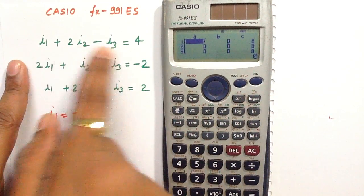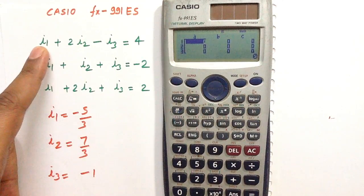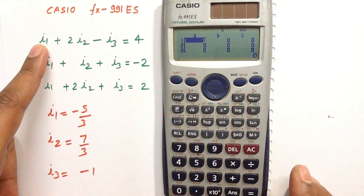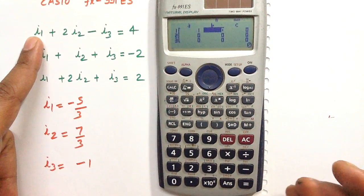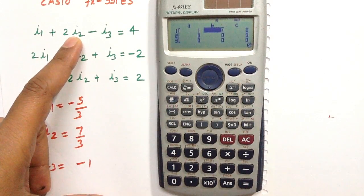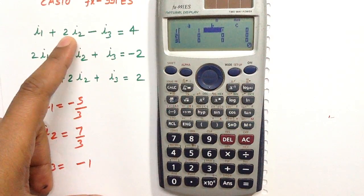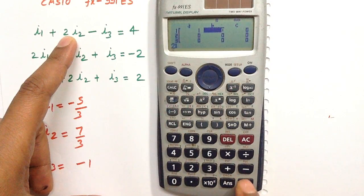If you see the first equation, the coefficient of I1 is 1, so the value of A is 1. Press equals to feed the value to the calculator. The coefficient of I2 is B, which is 2. Press the equals button to feed the value to the calculator.